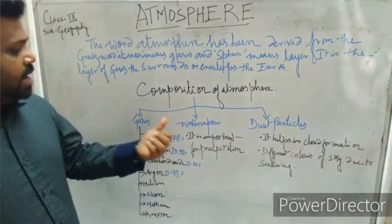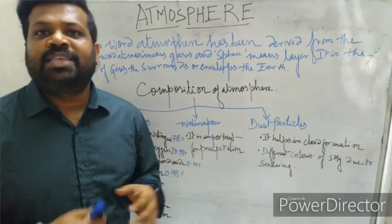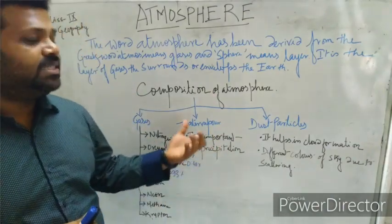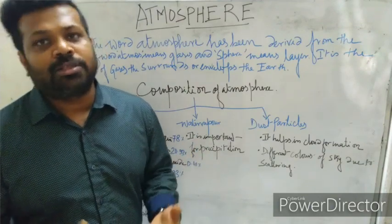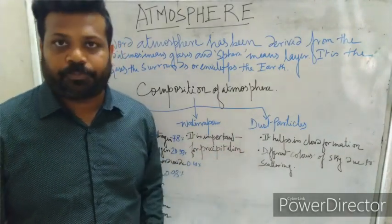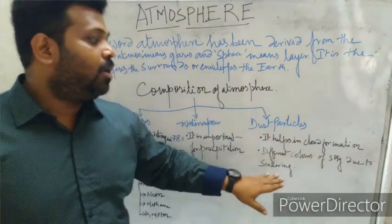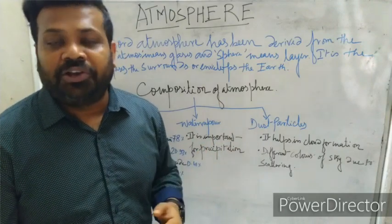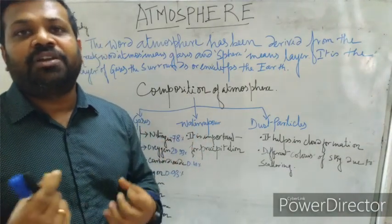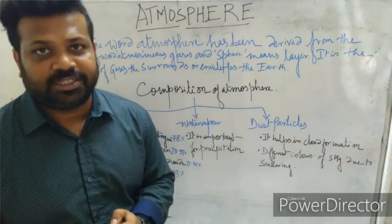Carbon dioxide is also a greenhouse gas; it absorbs heat and maintains the temperature — it acts like a blanket. Next comes water vapor: all water bodies get heated up and water evaporates, forming water vapor in the atmosphere. Water vapor is important for precipitation — rainfall, snowfall, and cloud formation. Dust particles help in cloud formation and also give the sky different colors, because dust particles scatter solar radiation of different wavelengths, causing colors like blue and red to appear in the sky.